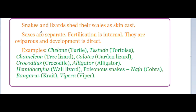Snakes and lizards shed their scales as skin casts. Similar to the moulting cycle seen in some arthropods and crustaceans, reptiles shed their outermost skin layer. The shed skin is referred to as skin casts.